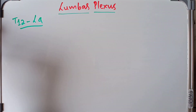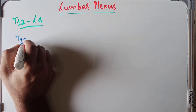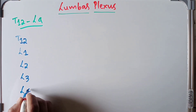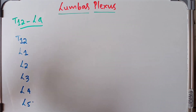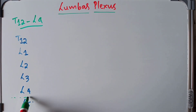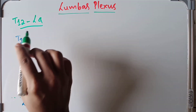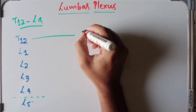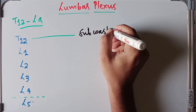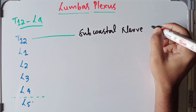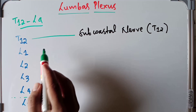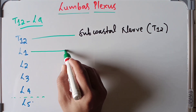We have the T12 segment, then L1, L2, L3, and L4. Note that L5 is not included in the lumbar plexus. T12 will give a branch called the subcostal nerve, which derives from the T12 spinal segment.